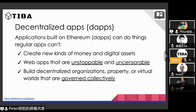DApps can do some cool stuff. They can create new kinds of money or digital assets on the blockchain. They are unstoppable and uncensorable — in China, for instance, they can stop you from accessing Google because they know the IP addresses of the Google servers. But with a global distributed network like Ethereum, with computers all around the world changing dynamically, it's very hard to stop the whole network. And you can build all kinds of things like decentralized organizations, virtual worlds, and applications that are governed collectively.